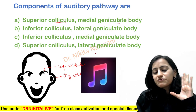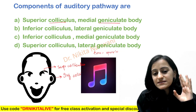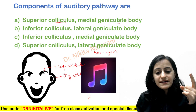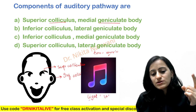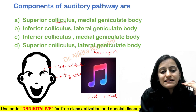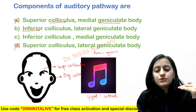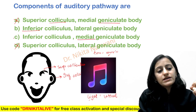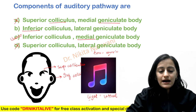For the ears, it is music — meaning it is the medial geniculate body. For the eyes, it is light — meaning it is the lateral geniculate body. So for the auditory pathway, it is the inferior colliculus, ruling out options A and D. And it is music, meaning medial geniculate body, so the correct answer is C.